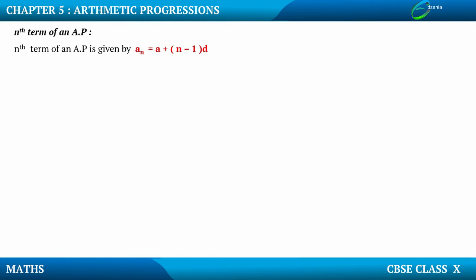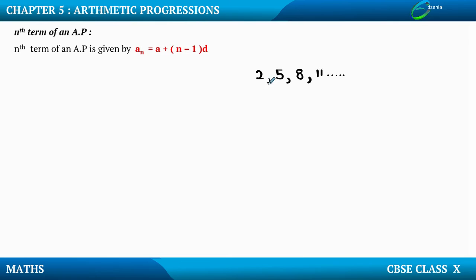I will first tell you what is the use of this formula and when to apply it. Suppose I have an AP: 2, 5, 8, 11 and so on. Can you say this is an AP? Yes, it is an AP because the difference between any two consecutive terms is constant.